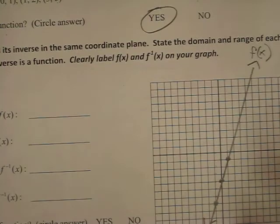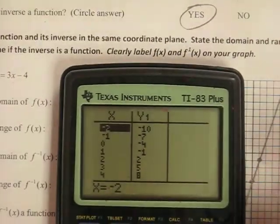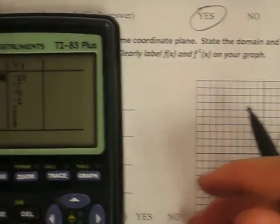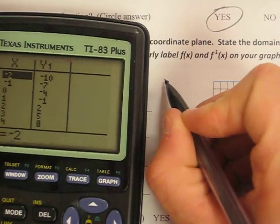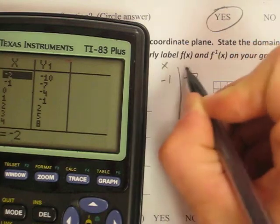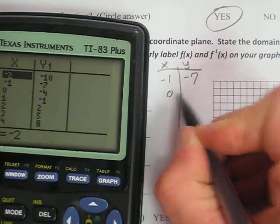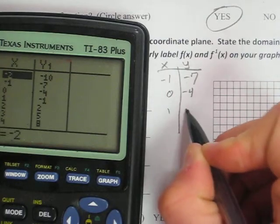Now, this is my table to graph the inverse. I'm just going to write down those points that I picked. I had negative 1, negative 7. This was x, and this was y. So negative 1, negative 7; 0, negative 4; and 1, negative 1.